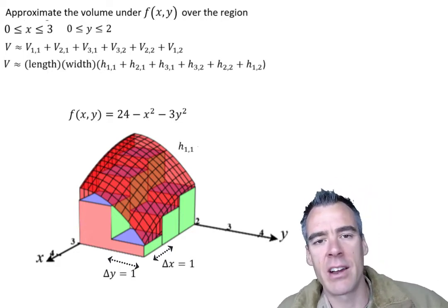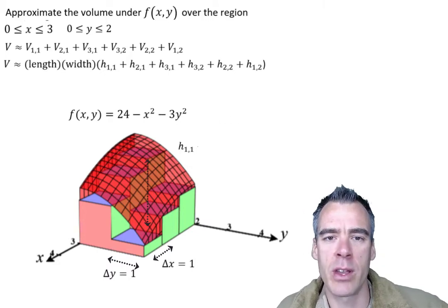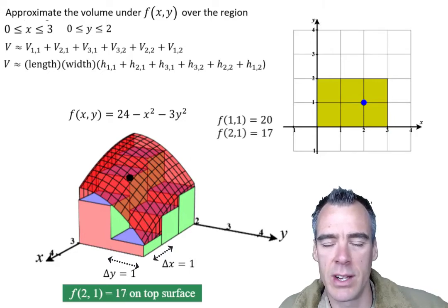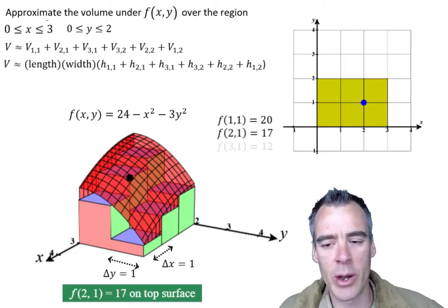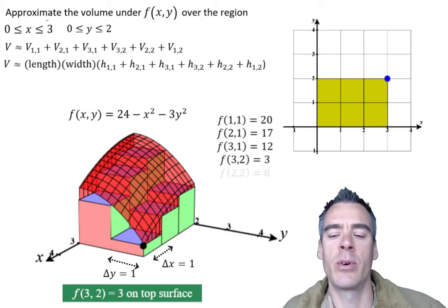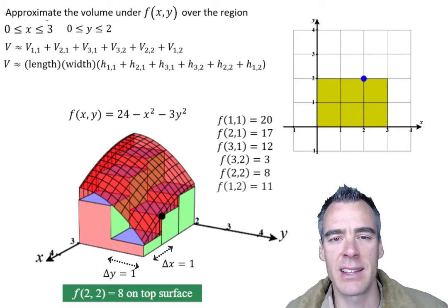So let's find the height of our first column at this point 1,1. We'll find that height is going to be 20. We'll find the next height at the point 2,1, which is going to be 17. At the point 3,1 it's going to be 12, at the point 3,2 it'll be 3, at the point 2,2 it'll be 8, and at the point 1,2 it'll be 11.